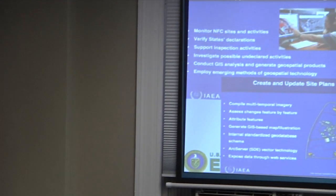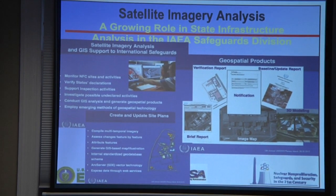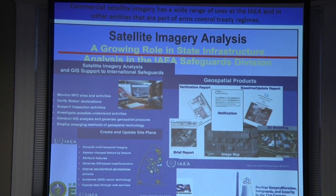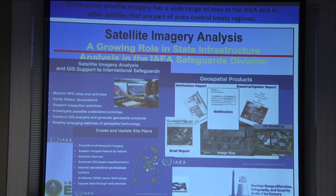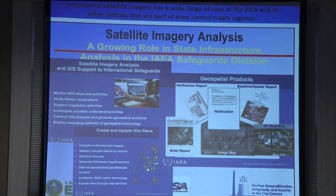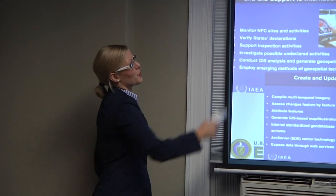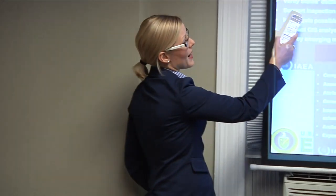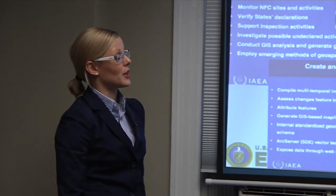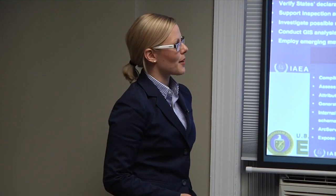As an example of how satellite imagery is used institutionally, the IAEA created a small but highly qualified satellite analytical unit within the Department of Safeguards. They use it in very useful ways: monitoring the nuclear fuel cycle and any changes to it, verifying state declarations, supporting inspection activities, and — one of the most complicated tasks — investigating possible undeclared nuclear activities.